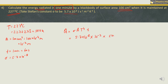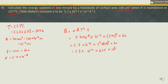Using Q = σAT⁴t = 5.7 × 10⁻⁸ × 10⁻² × 500⁴ × 60. Since 500⁴ = 5⁴ × 100⁴ = 625 × 10⁸, we get 625 × 60 × 5.7 × 10⁻² = 2126.25 joules. This is the energy radiated.